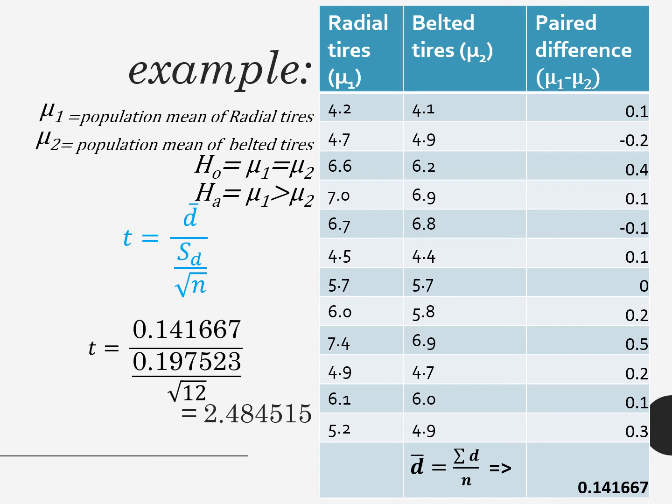Now we will find out their pair differences of population 1 from population 2. The pair difference will be found, and then we will add up in the formula d̄ divided by standard deviation upon √n. We will take mean of the pair differences: Σd/n. The pair differences mean is 0.141667. Then we will find the standard deviation of the pair differences: 0.197523. Since our n is 12, we will divide it by √12, and we get our t answer equals 2.484515. This is our calculated t.